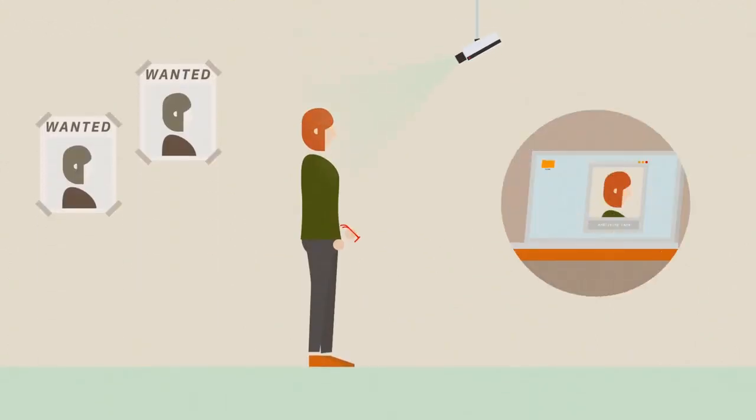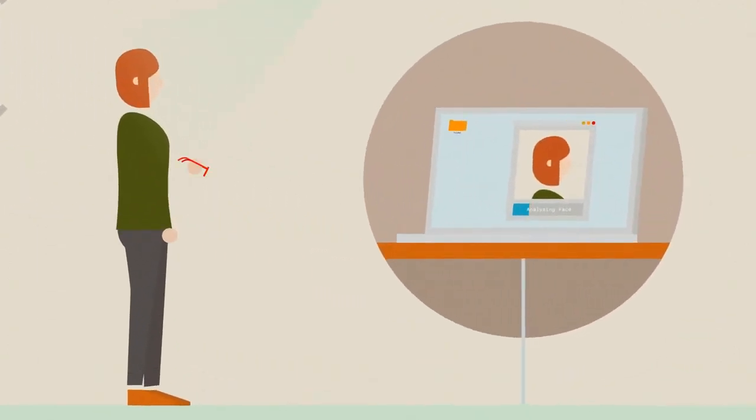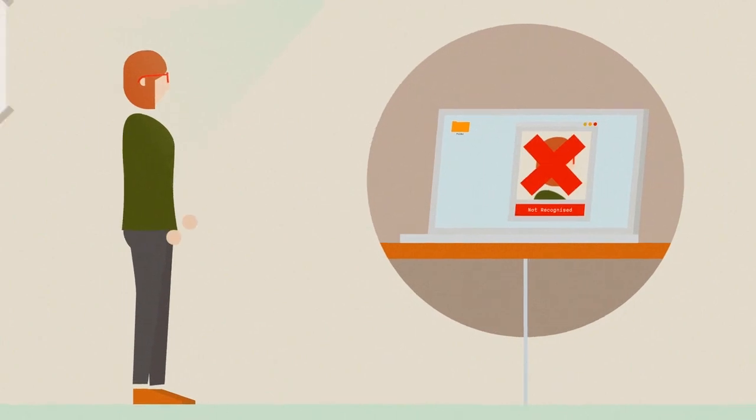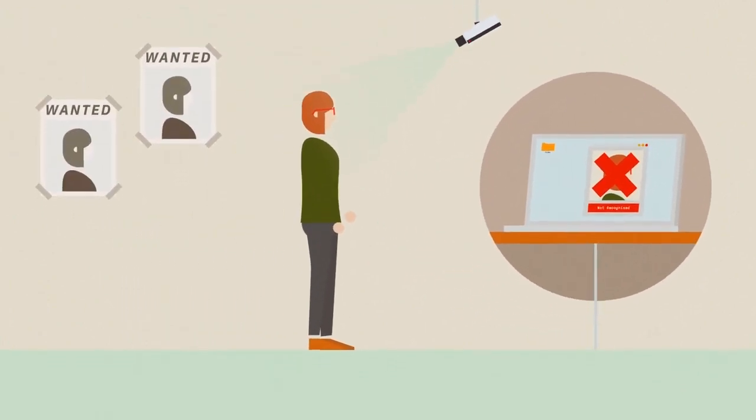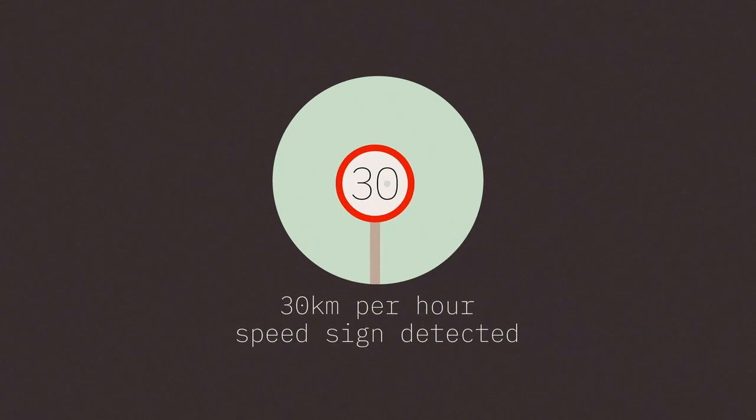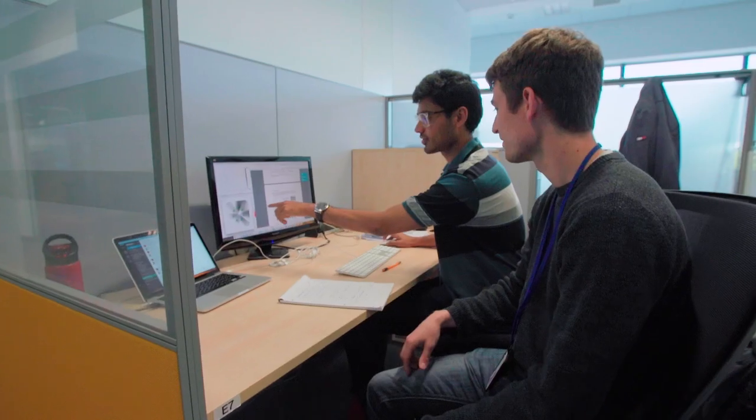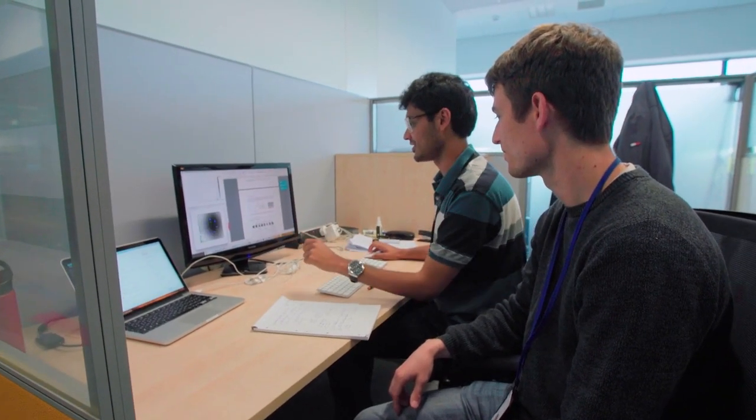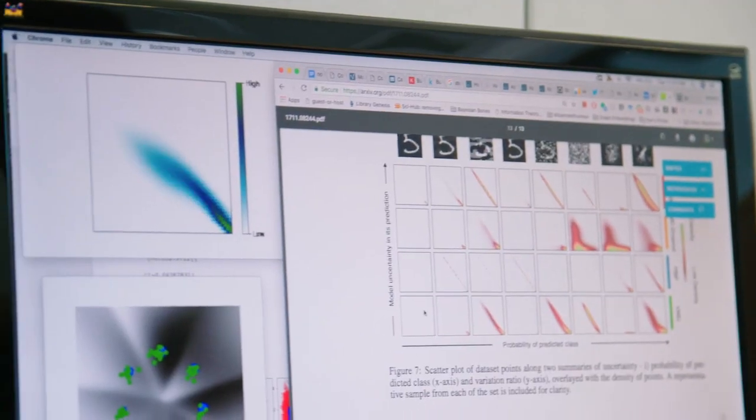Attackers can also evade face recognition systems by wearing specially designed glasses or defeat visual recognition systems in autonomous vehicles by sticking patches to traffic signs. This poses a real threat to the deployment of AI in security-critical applications.